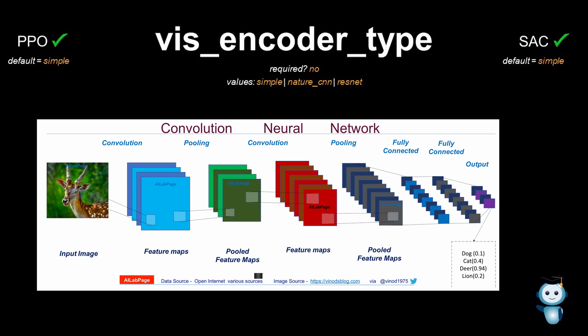With the vis_encoder_type parameter, we can choose between three different convolutional layer architectures. Simple is the most basic one with two conv layers. NatureCNN has three conv layers and some nice tweaks that are good for reinforcement learning. ResNet will use the IMPALA ResNet architecture, which is a huge residual network specifically designed for reinforcement learning — I've linked the original paper in the description. My recommendation: if you are using visual observations, start with simple CNN since it is the computationally cheapest. If training results are not good enough, try NatureCNN, and if that's not good either, go to ResNet. If ResNet isn't good, go back to simple and think about other parameters or your reward function.